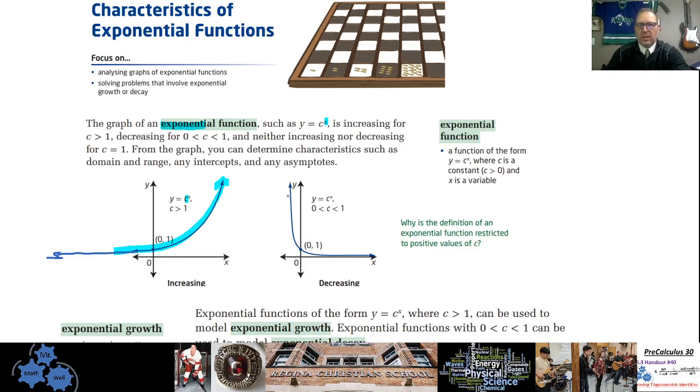And if c is between 0 and 1, we have an exponential function that looks like this. It drops from left to right. So it comes down and it then gets closer to y equals 0 on the right side. So this would be like y equals 1 half to the power of x. And this, of course, would be like 2 to the power of x, as an example.